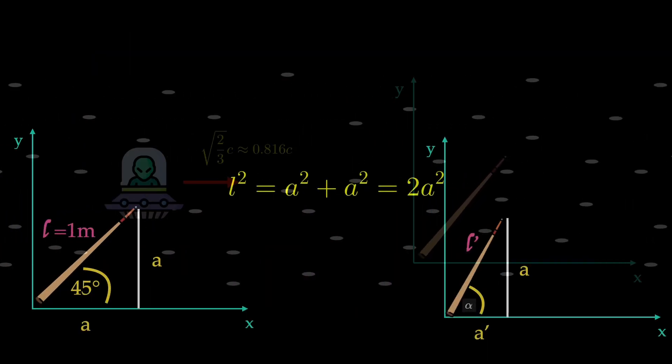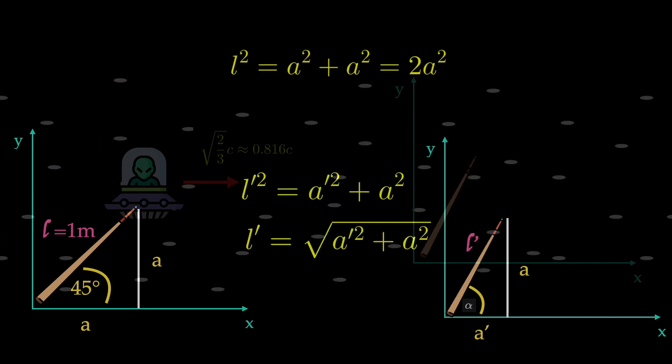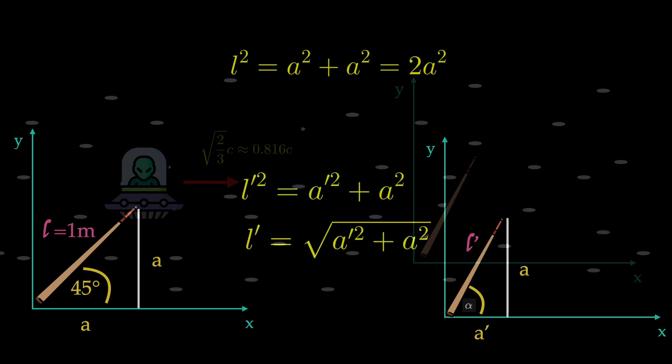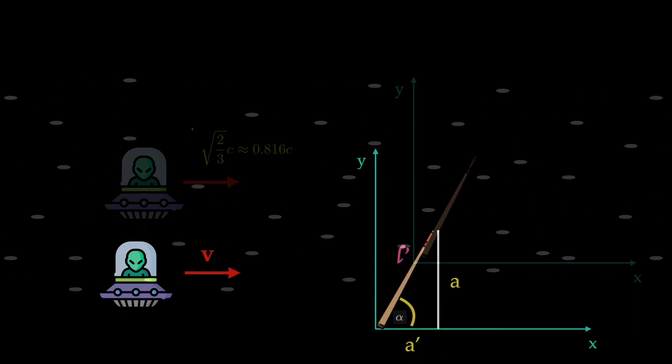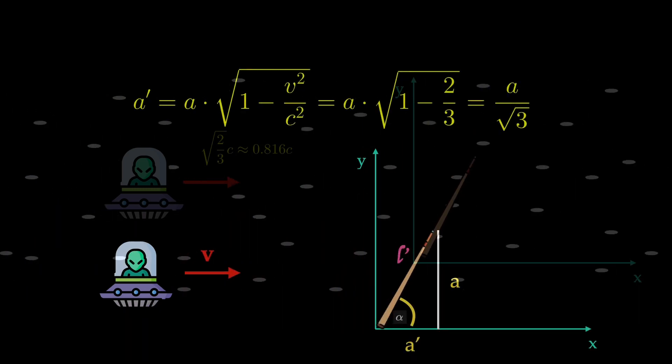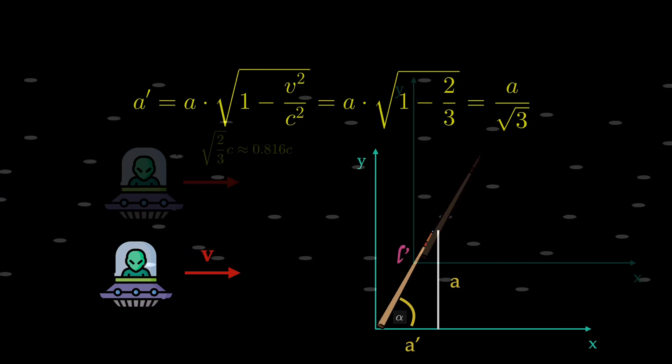Now we use Pythagoras to determine l and l prime. To get a value for l prime we need to calculate a prime which is the length contracted. With the use of the length contraction formula we get a over square root of 3 for a prime.